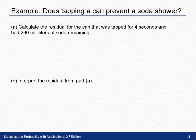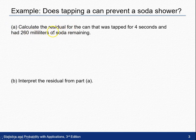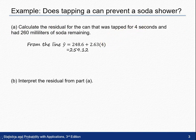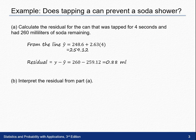In part A, we're asked to calculate the residual for a can that was tapped for 4 seconds and had 260 milliliters. We know that the residual can be calculated by y minus y-hat. Our y value is 260 milliliters of soda remaining. Substituting 4 seconds into the line gives us a predicted value of 259.12 milliliters. So the residual is 260 minus 259.12, giving us 0.88 milliliters.